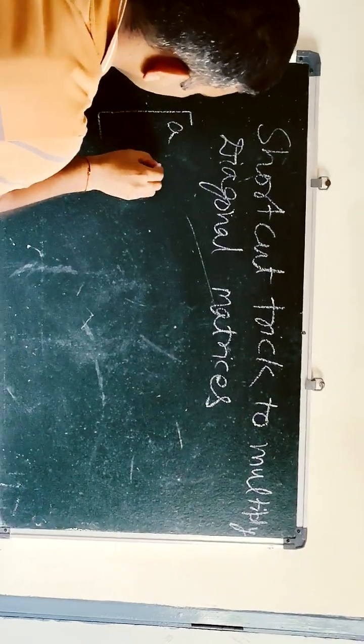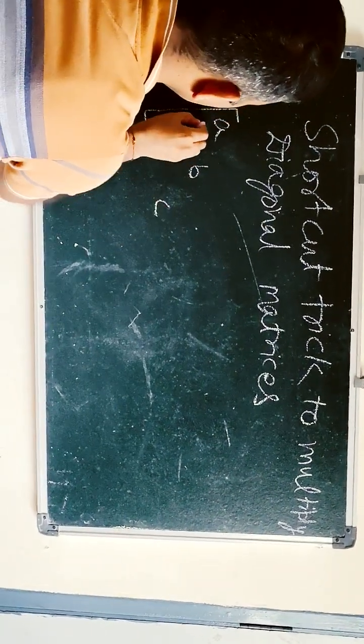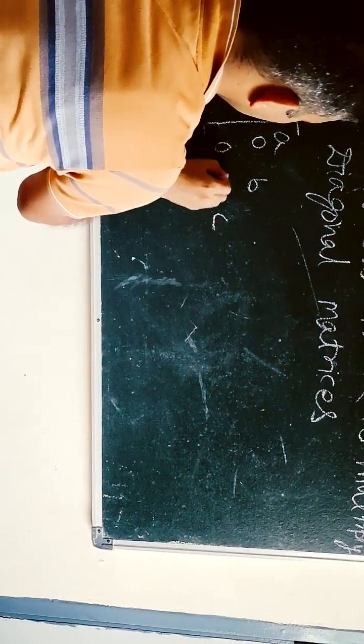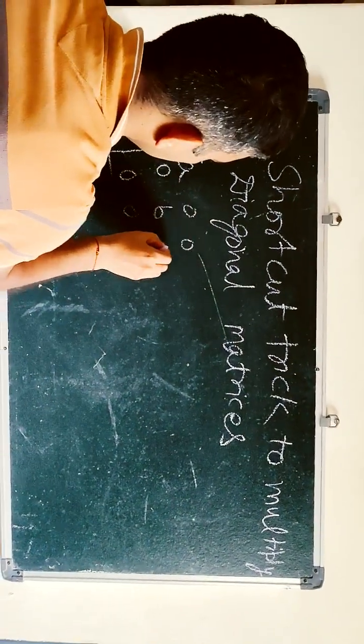This is the diagonal matrix: A, B, C, 0, 0, 0, 0, 0, 0, 0.